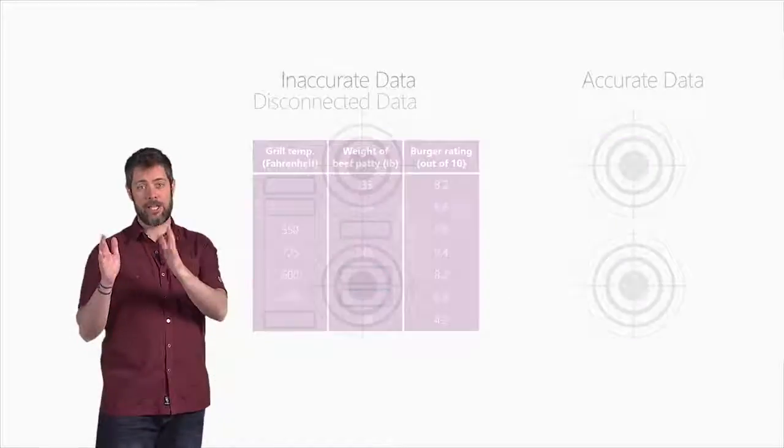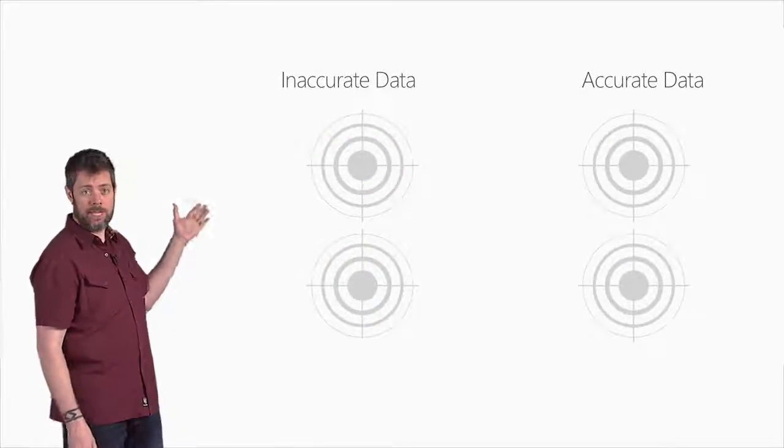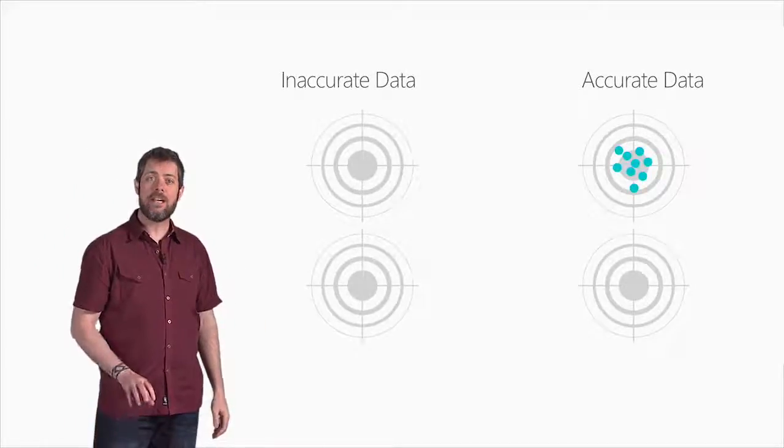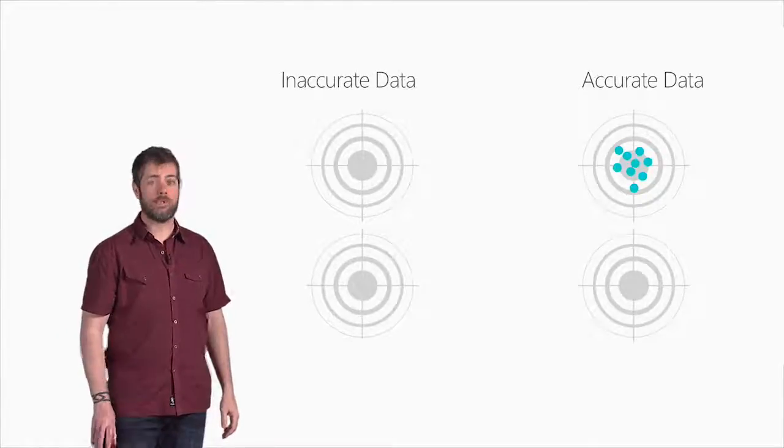The next ingredient we need is accuracy. So here are four targets we'd like to hit with arrows. Look at the target in the upper right. We get a tight grouping right around the bullseye. That of course is accurate.